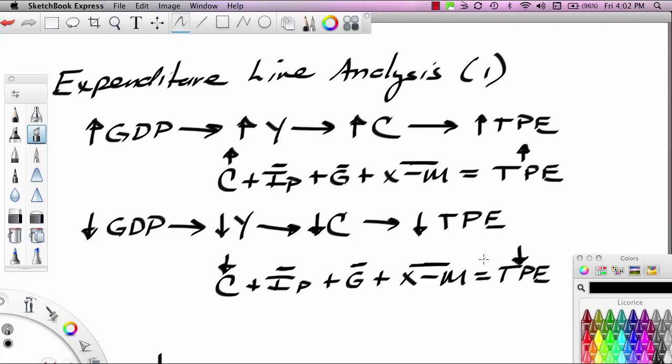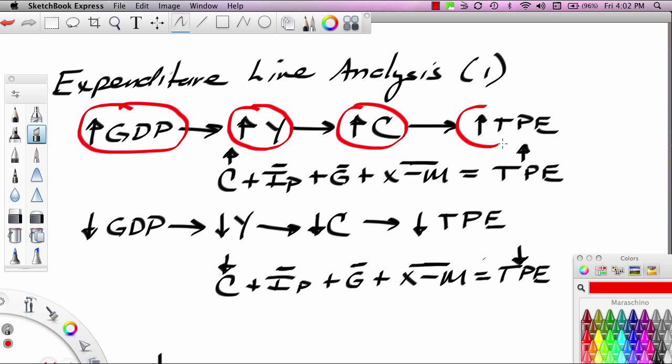We assume that the viewer has already learned some things about GDP, disposable income, consumption, and overall spending. However, I do take a few moments here to review some basic concepts. Notice that when GDP increases over time that's going to push disposable income higher which will push consumption higher which will push total planned expenditures higher. Remember total planned expenditures really are a measure of what we call aggregate demand.